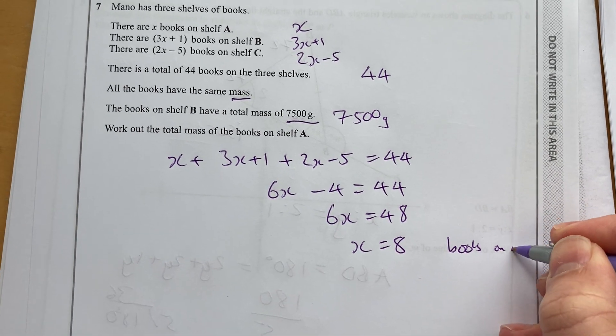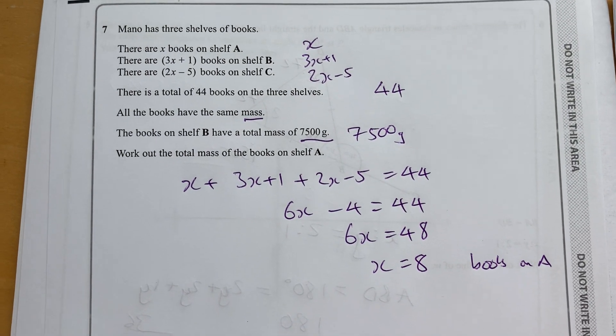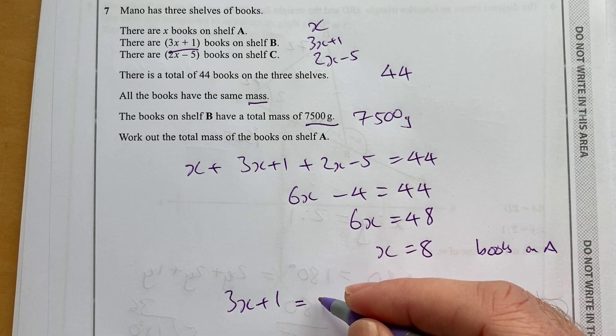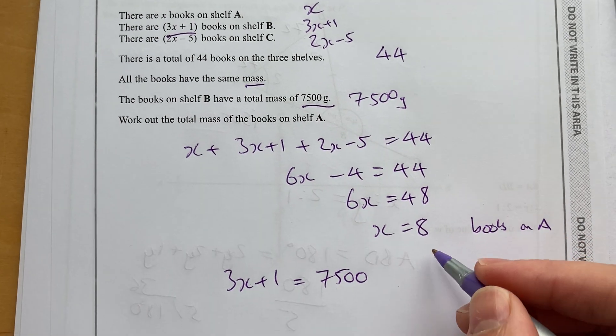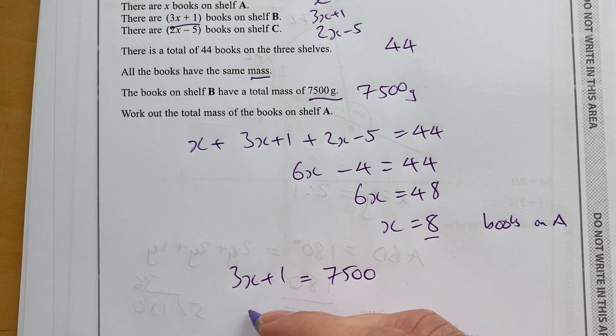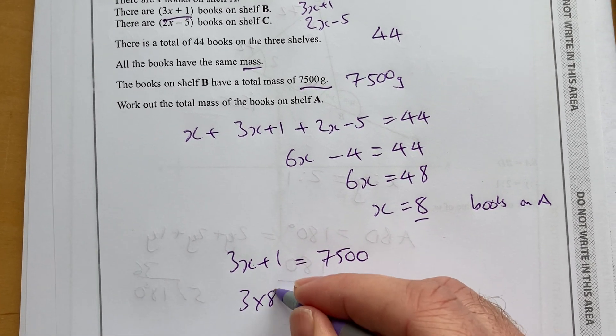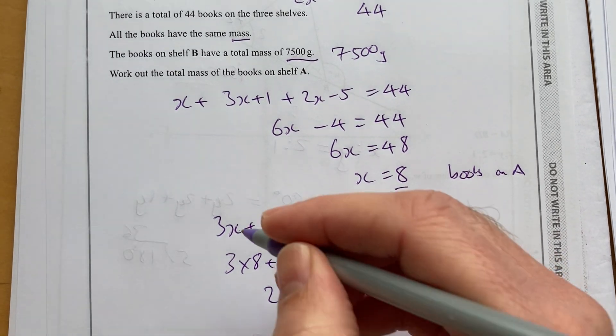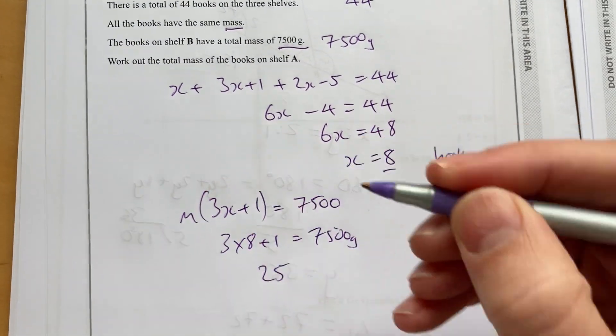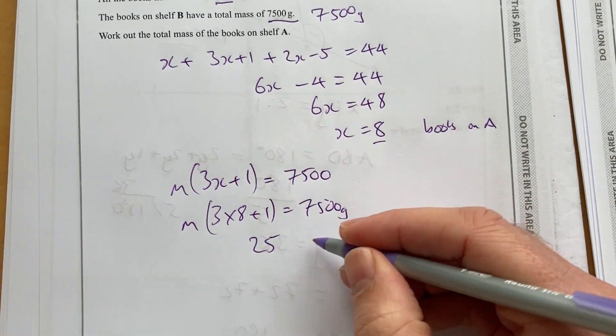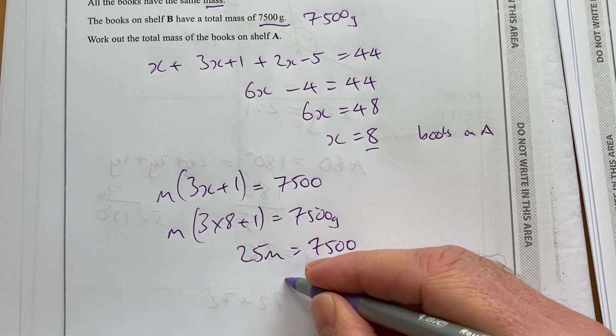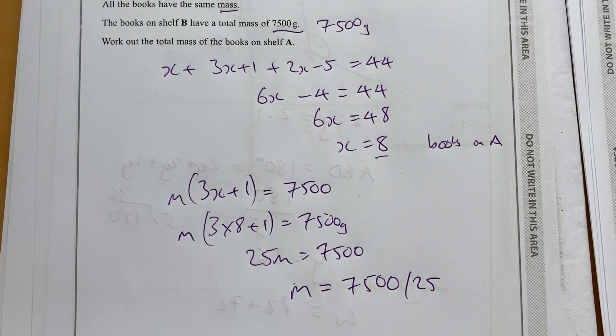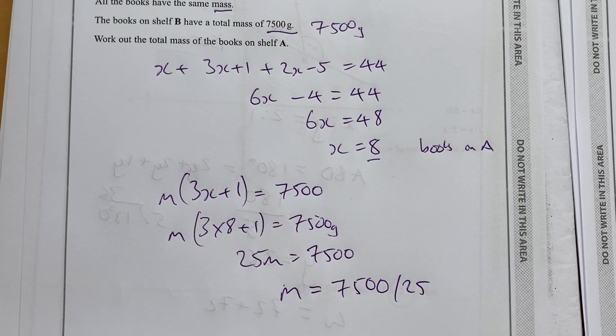So that's what X is. That's the number of books on A. And now I want to know what the mass is. We can take this equation here. 3X plus 1 times the mass of a book equals 7,500. We now know what X is. 3 times 8 plus 1 is 25. 25M is 7,500, so M equals 7,500 divided by 25.